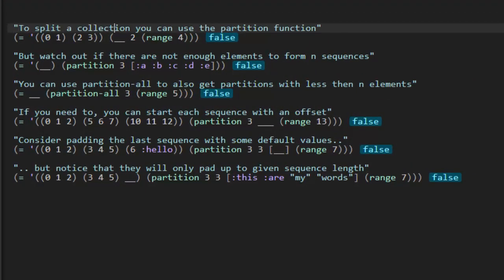To split a collection, you can use the partition function. So they've got it blank here, but I think we're supposed to be calling the partition function here. And we pass it the number 2, and then we pass it this sequence of 4 items. Range 4, as we've learned in previous videos, just will return four values, 0, 1, 2, 3.